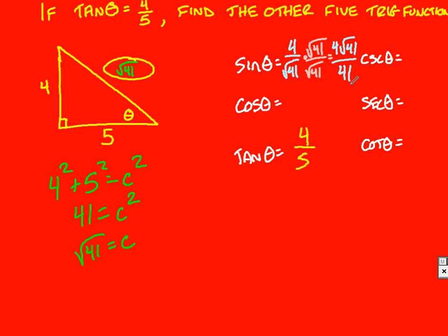I can do all the other ones now because I have all three sides of the triangle figured out. Cosine is adjacent over hypotenuse, so it's 5 over root 41. When I multiply through, it'll be 5 square root of 41 over 41.